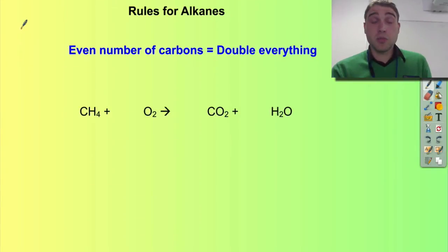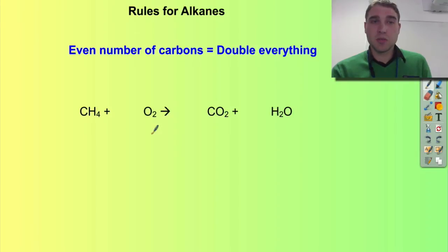We're going to look at using simple rules to help us balance straight chain alcohols and alkanes. We're going to start with the alkanes because they're a little bit easier. The rule is: if there's an even number of carbons, you double everything.